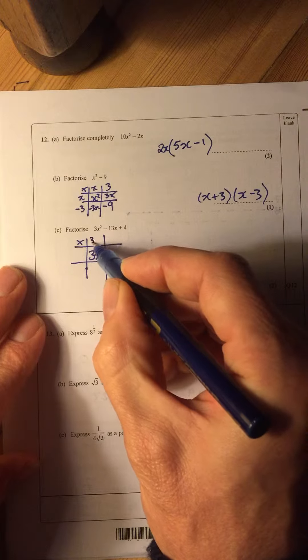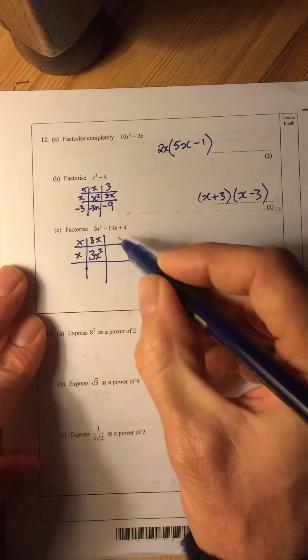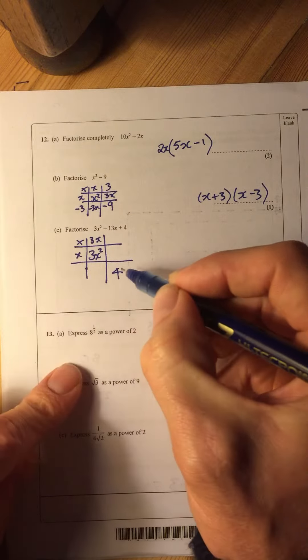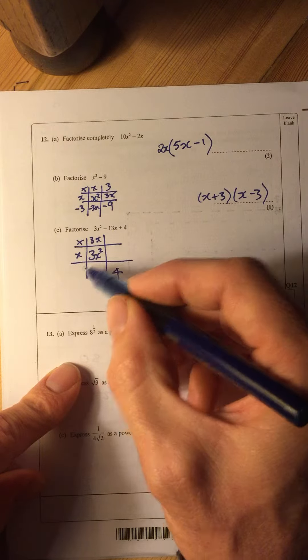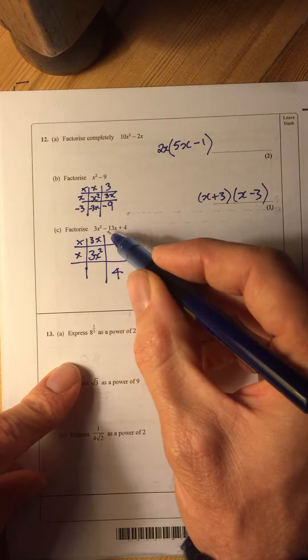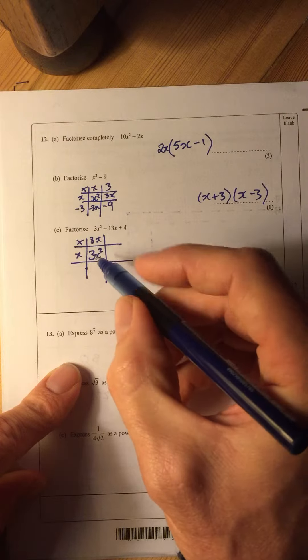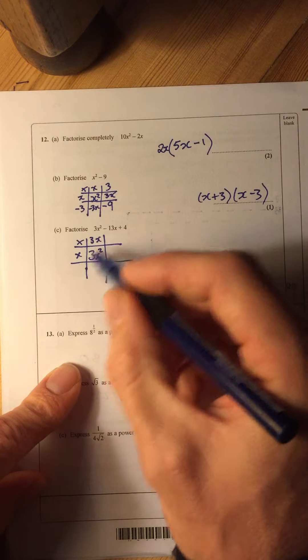And so, because it's prime, one of them has got to be 3x and one of them has got to be x. I've got to make 4 down here, so that can either be 4 and 1 or 2 and 2. Well, 2 and 2 is not going to give me my minus 13x. So I reckon that's going to be 4 and 1.